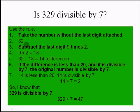That is what we have to do — subtract 2 times the last digit from the remaining number. 32 minus 18 equals 14. The difference is less than 20 and is divisible by 7, so the original number is divisible by 7. 14 is less than 20 and it is divisible by 7 — because 2 times 7 is 14.